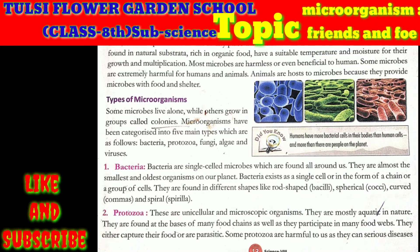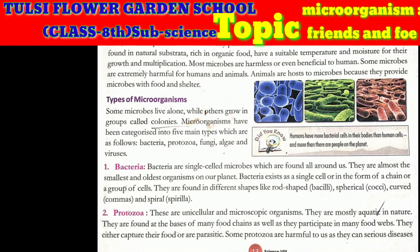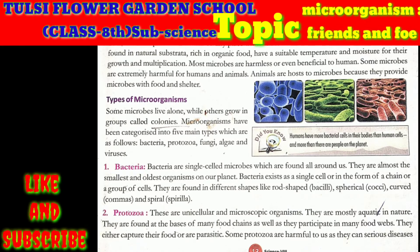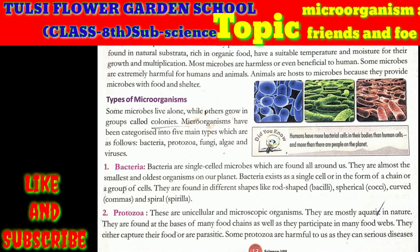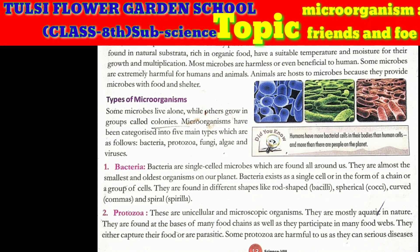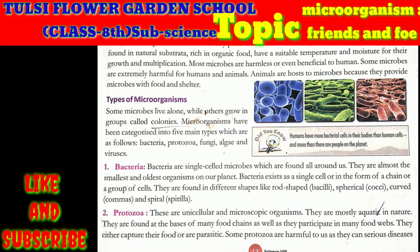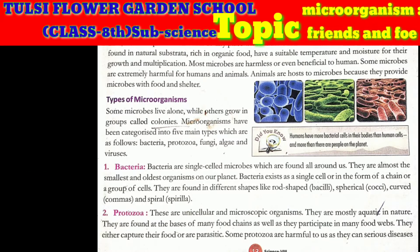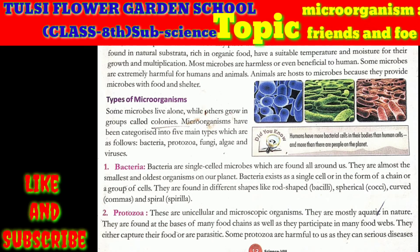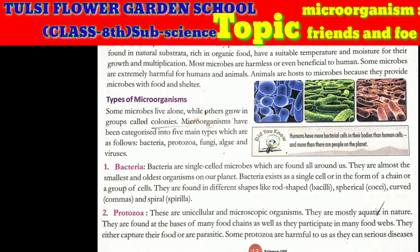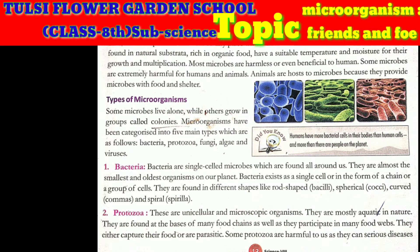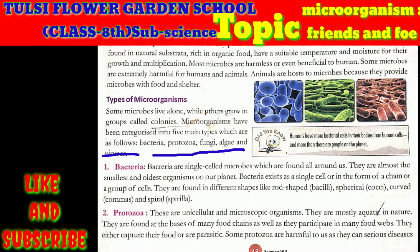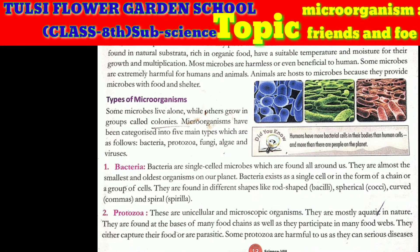Let's see our next topic: types of microorganisms. Some microbes live alone while others grow in groups called colonies. Microorganisms have been categorized into five main types: first is bacteria, second is protozoa, third is fungi, fourth is algae, and fifth is virus. These are the five types of microbes.